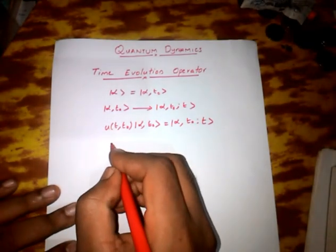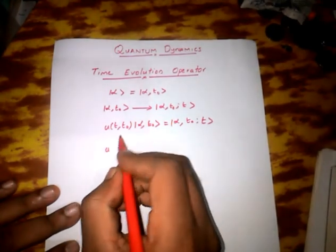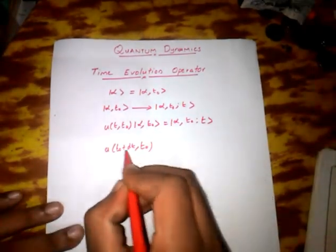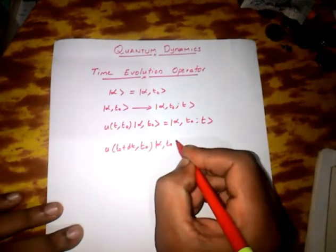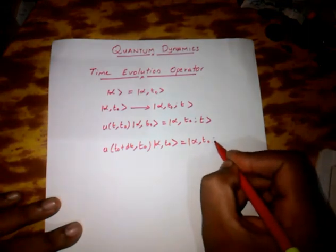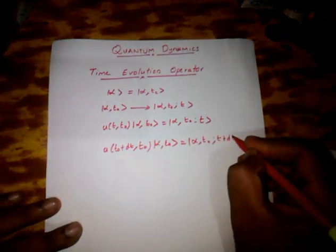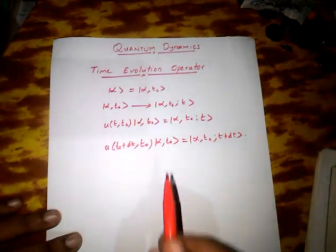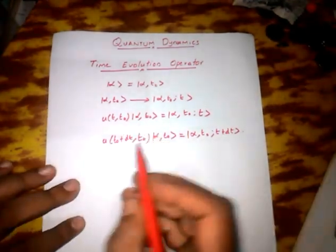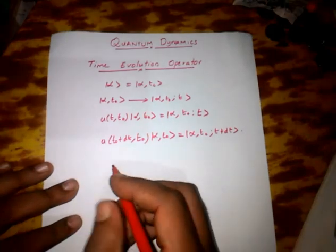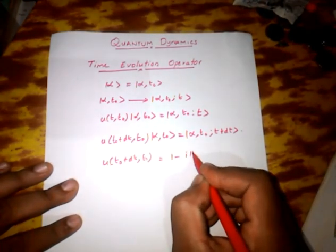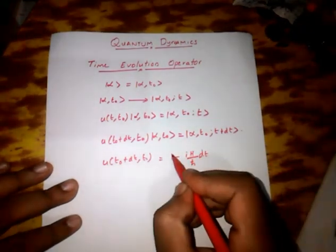Let us take an infinitesimal time evolution operator as U(t-naught + dt, t-naught). This will change a state alpha t-naught into a state alpha t-naught, t plus dt. We take this infinitesimal time evolution operator to be in the form: U(t-naught + dt, t-naught) = 1 minus iH divided by h-cross, times dt.